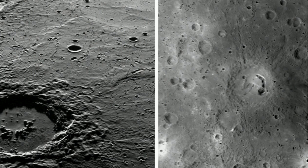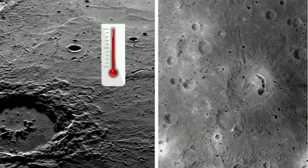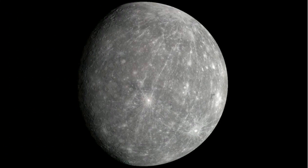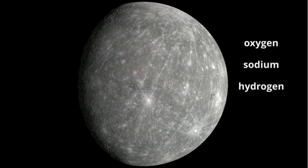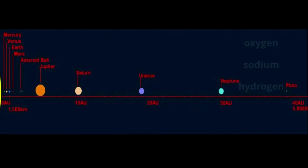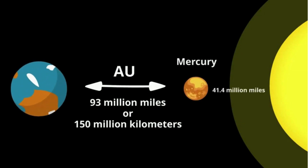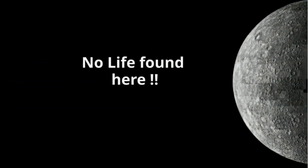Mercury has surface temperatures that are both extremely hot and very cold at night. It has a very thin atmosphere composed mainly of oxygen, sodium, and hydrogen. It is 0.4 AU from the Sun, so it's 40% the distance from the Sun compared to Earth. An AU is the distance from the Earth to the Sun. Because of the extreme temperatures and solar radiation, it is very unlikely to have any life.